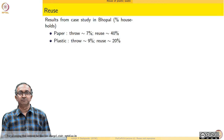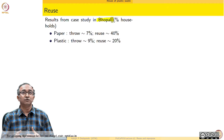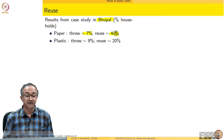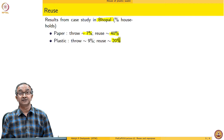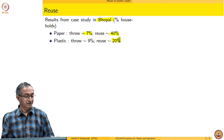Let us look at reuse a little more by considering a case study from Bhopal, where a survey was done to figure out how materials — whether metal, glass, paper, or plastic — are being used. Looking at data related to paper and plastic, households reported that they reuse a fair bit of paper. But if you look at reuse of plastics, it is much less. So if we are to think of plastic material as more sustainable, then certainly reuse of plastics has to be increased.